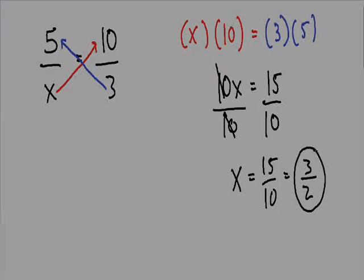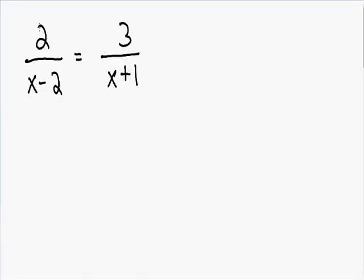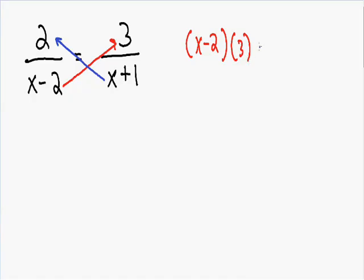Now let's go over a harder example. Here we have 2 over (x minus 2) is equal to 3 over (x plus 1). Once again we're going to cross multiply. We take (x minus 2) and multiply it by 3, and we take (x plus 1) and multiply it by 2. So in red we have (x minus 2) times 3, and in blue we have (x plus 1) times 2.